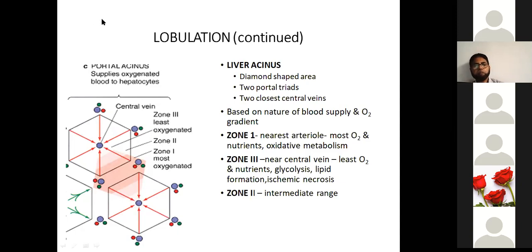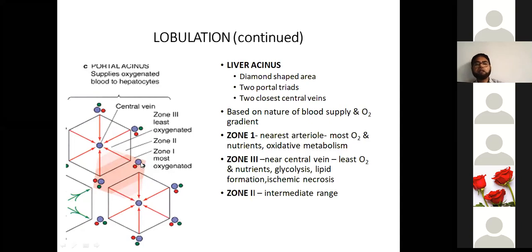Blood is coming from the hepatic arteries, so zone 1 receives the most oxygenation compared to the oxygenation present in zone 3. That means the saturation of oxygen decreases from zone 1 to zone 3. If damage occurs in the portal triad area, then zone 1 is damaged and oxygenation will not occur properly.